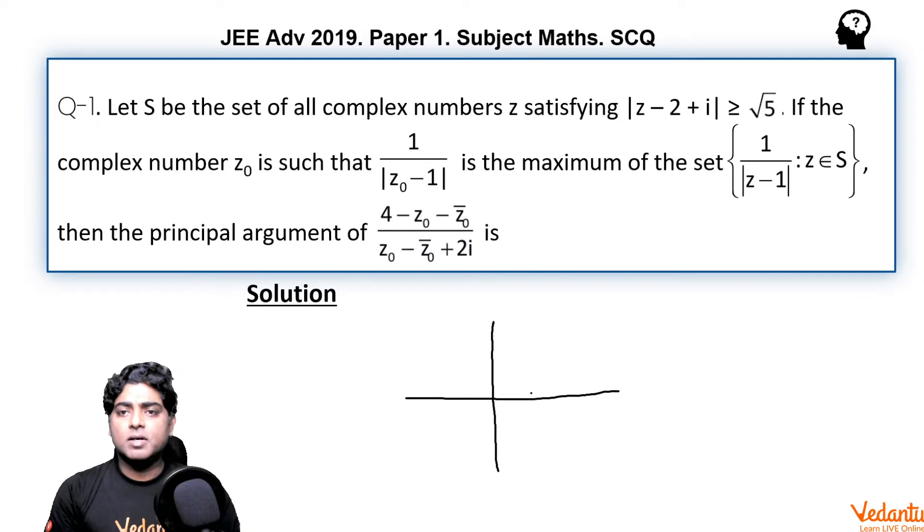2 comma minus 1 somewhere here is the center and it's passing through, as the distance of origin from 2 comma minus 1 is also root 5, so it should be like this.